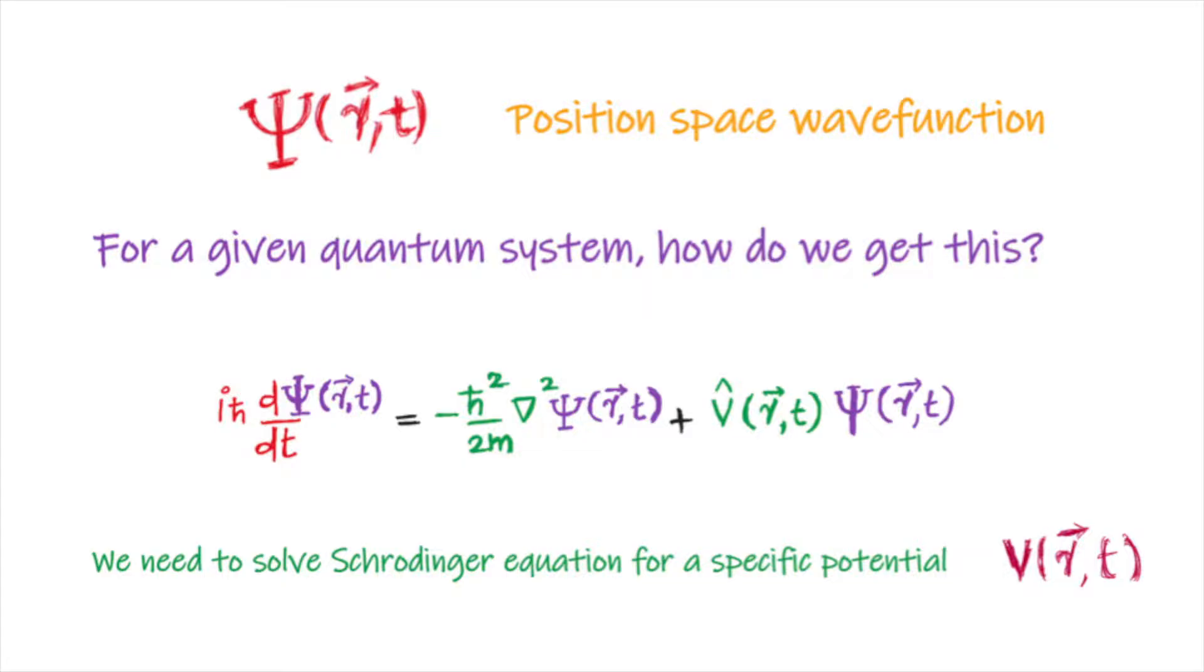In position representation, the position space wave function of a given system is usually denoted by the wave function ψ, which is usually a function of r and t. One can ask, how do we get this position space wave function ψ for a given potential V? The answer is, we need to solve time dependent Schrödinger equation for the given potential V.